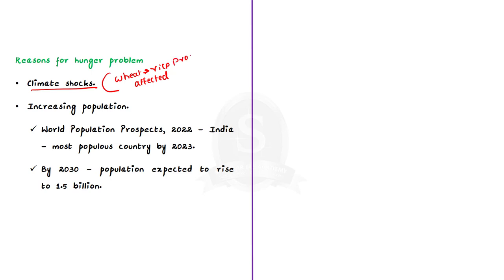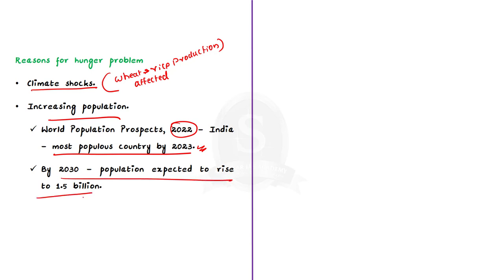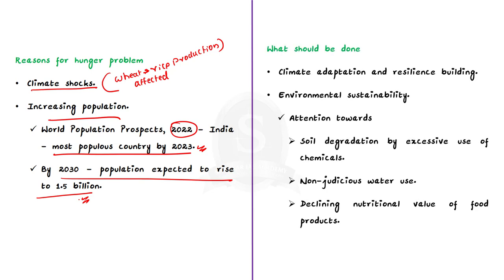The second factor contributing to hunger is India's increasing population. According to the World Population Prospects 2022, India will be the most populous country by 2023, and by 2030, India's population is expected to reach 1.5 billion. This is another reason why a percentage of India's population faces hunger and malnutrition. So what are the multifaceted approaches that India should take to address these issues?